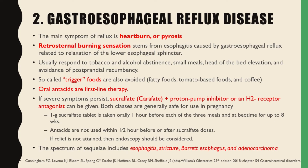Oral antacids are the first line of therapy for GERD. If severe symptoms persist, we can give sucralfate plus a proton pump inhibitor or an H2 receptor antagonist — both classes are generally safe in pregnancy. The dose is one gram sucralfate tablet taken orally one hour before each of the three meals and at bedtime for up to eight weeks. Antacids are not used within one half hour before or after sucralfate doses. If relief is not attained, endoscopy should be considered. The spectrum of sequelae includes esophagitis, stricture, Barrett's esophagus, and adenocarcinoma.